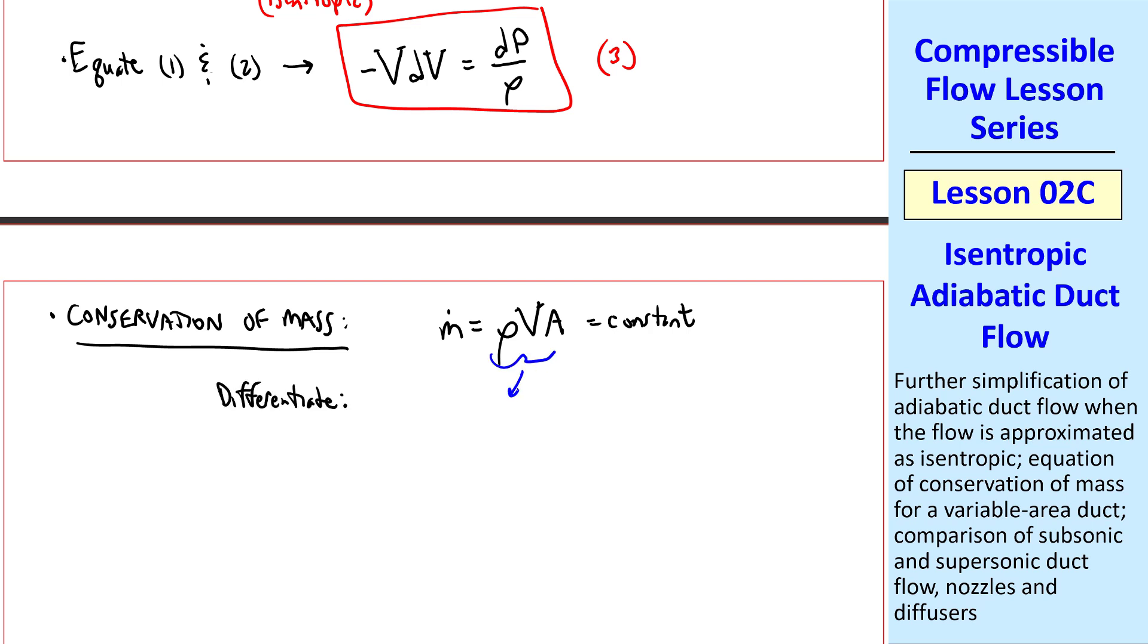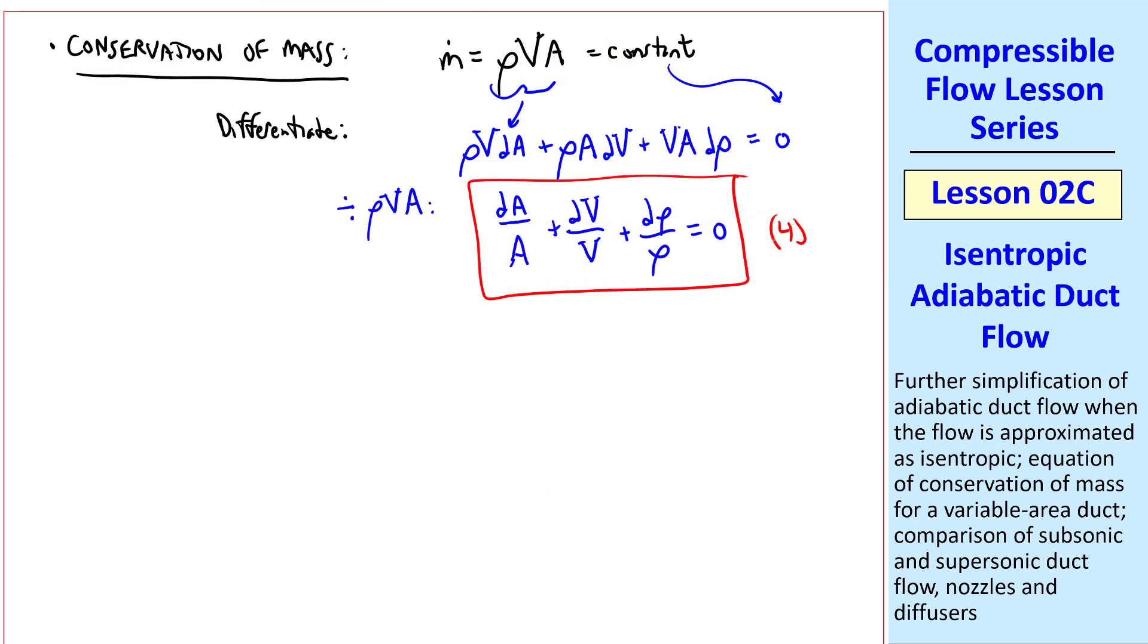We differentiate this term by parts: rho V dA plus rho A dV plus V A d rho, and the derivative of the constant is 0, of course. To get this into a nicer form, we divide each term by rho V A. We get dA over A plus dV over V plus d rho over rho equals 0. I'll call that equation 4.